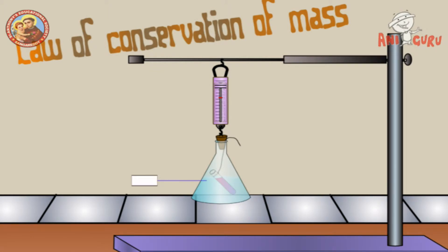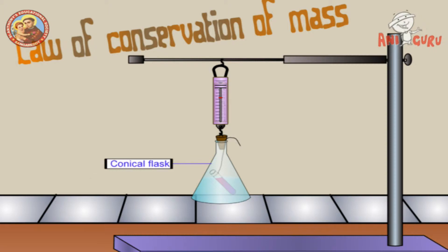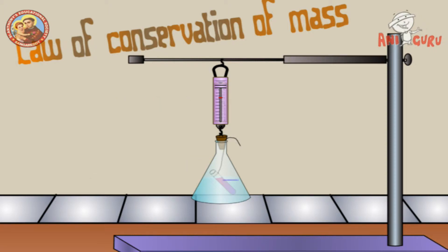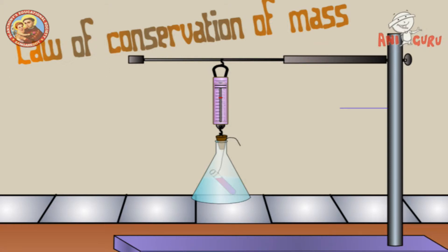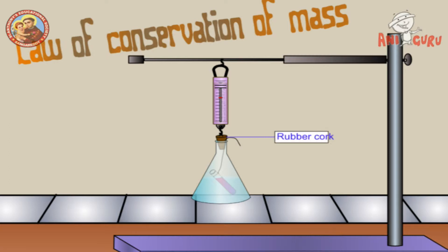Materials required: Potassium iodide, distilled water, conical flask, spring balance, small test tube, retort stand, ripper cock, and thread.